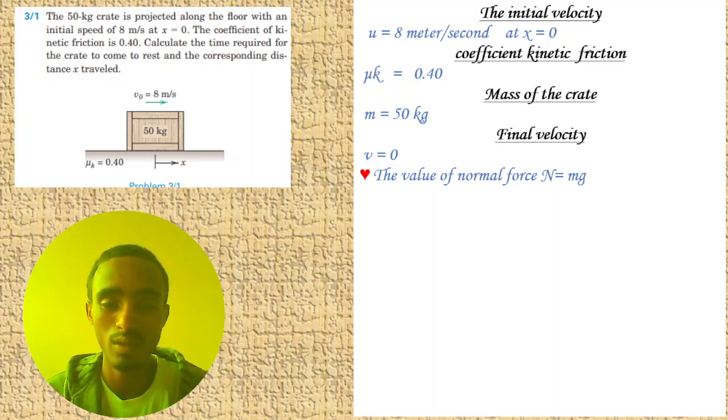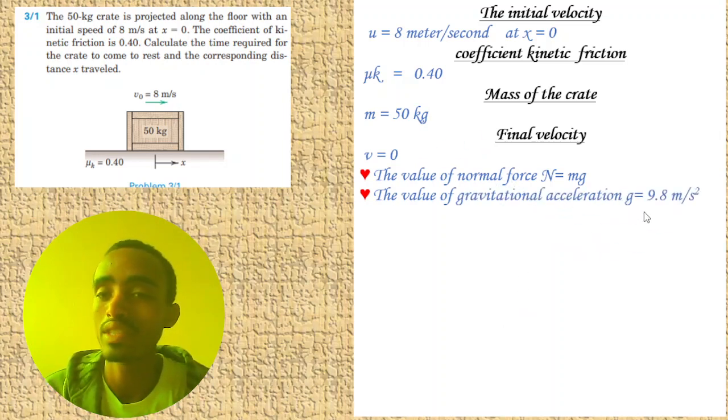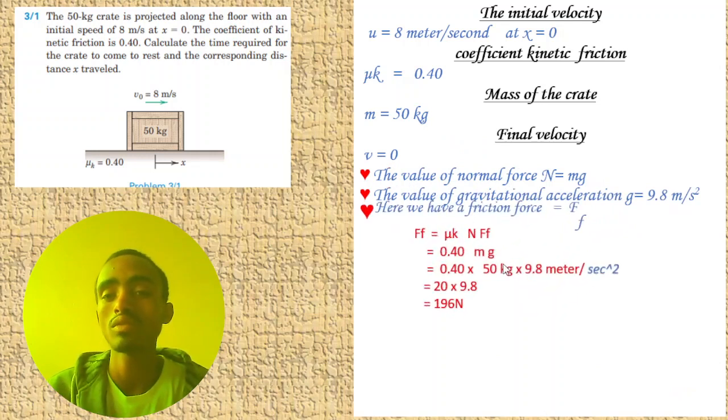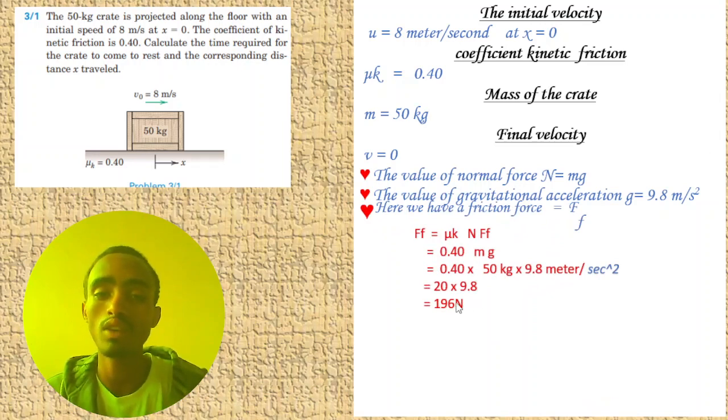We can substitute the value: g equals 9.8 m/s² which is acceleration due to gravity on the surface. After finding the normal force, we can calculate the frictional force.